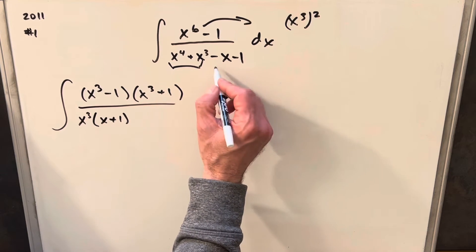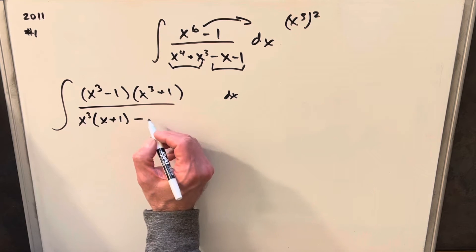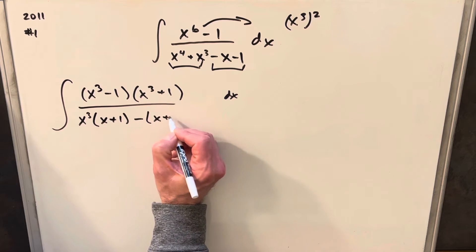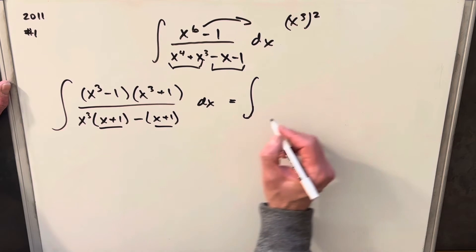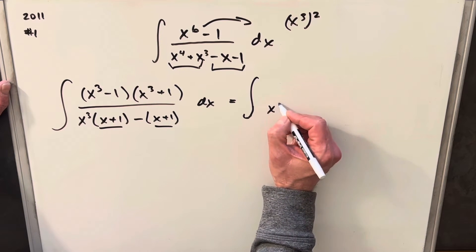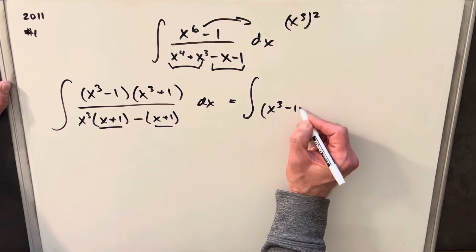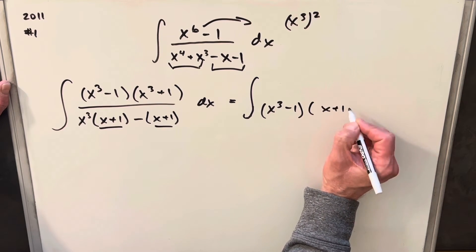And then if I pull a minus sign out of this part, we'll have minus x plus 1. And notice we have x plus 1 in common here, we can just factor that out. So I can write this denominator as x cubed minus 1 times x plus 1.